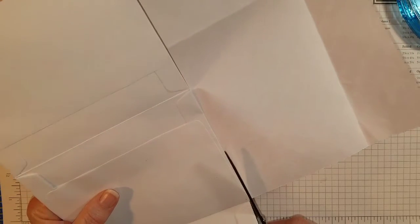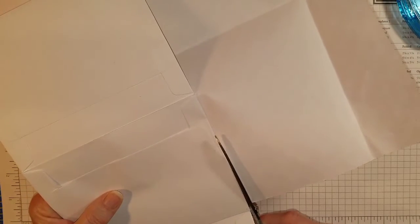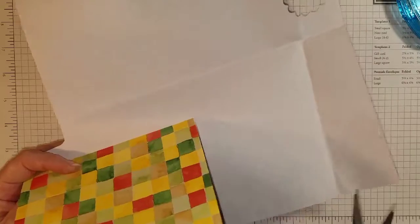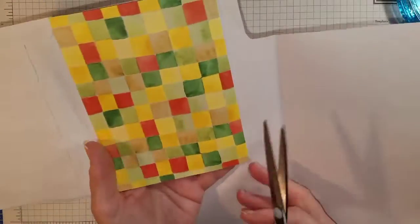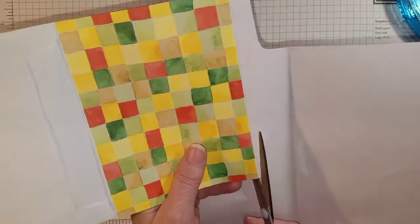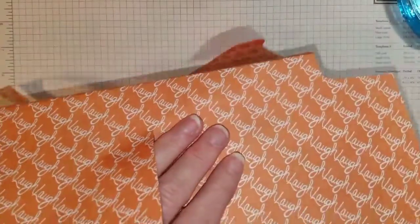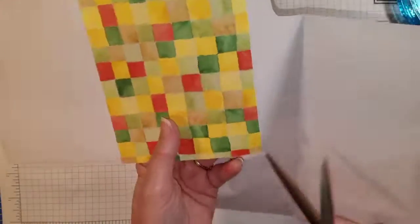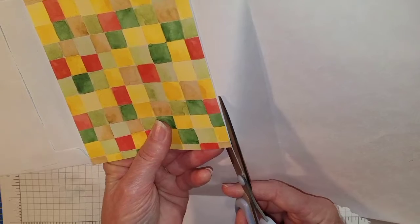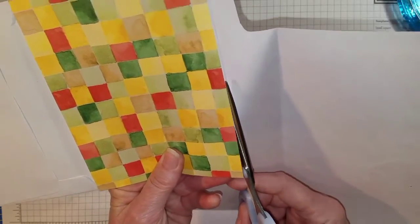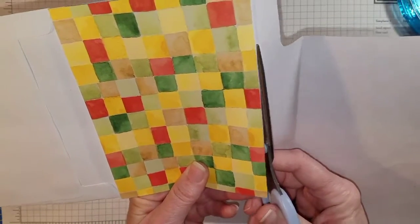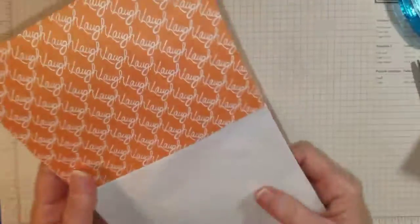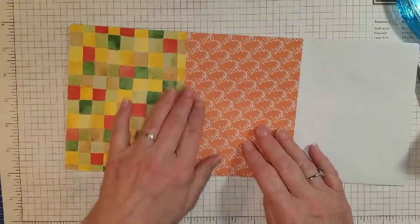I'm going to just cut the excess off here. You can get really fancy and use a paper trimmer and measure exactly how big the paper needs to be if you want to. I just kind of like doing it this way; it makes it easy and it makes it fast. And I don't have to fool with the paper trimmer. So now I've got two sections done.